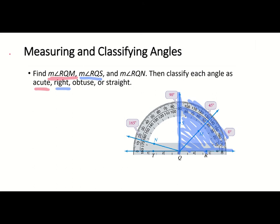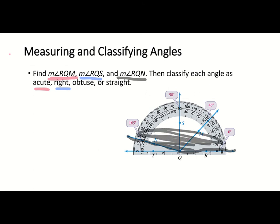Our last one is the measure of angle RQN. Here is R to Q to N — we're looking at this whole angle, and we can see that's 165 degrees. So that's going to make that an obtuse angle.